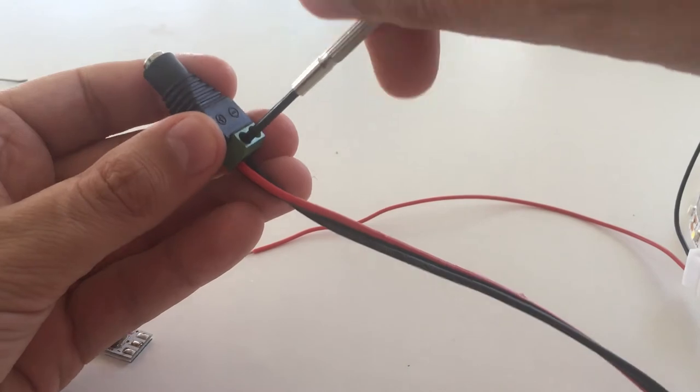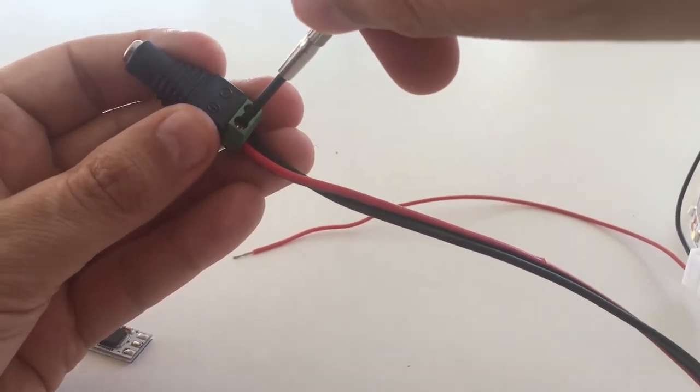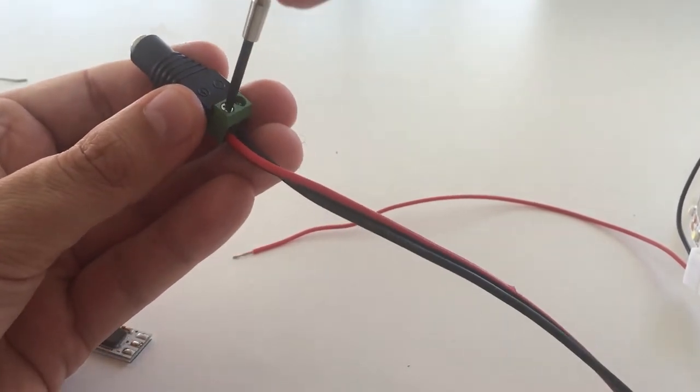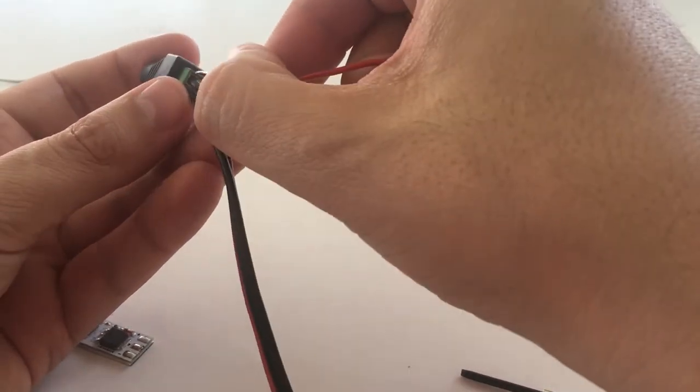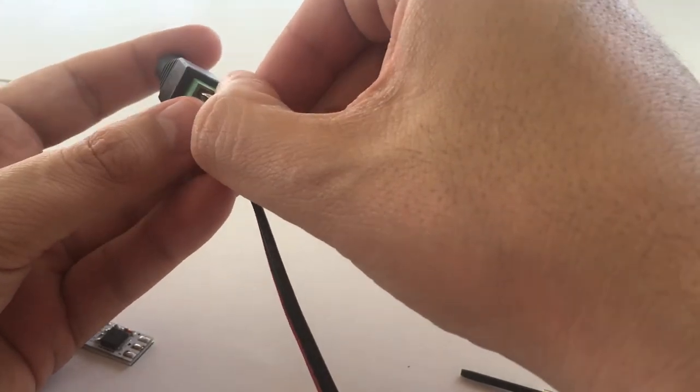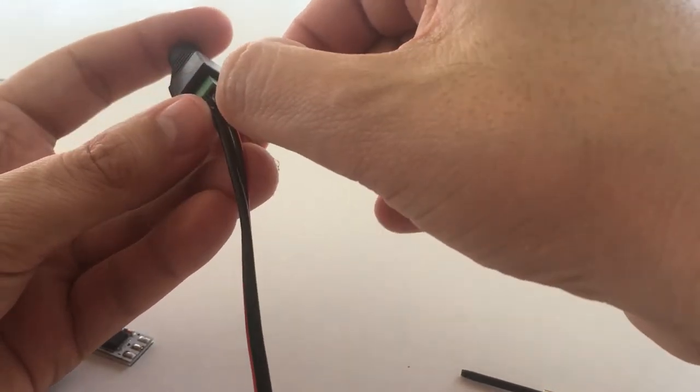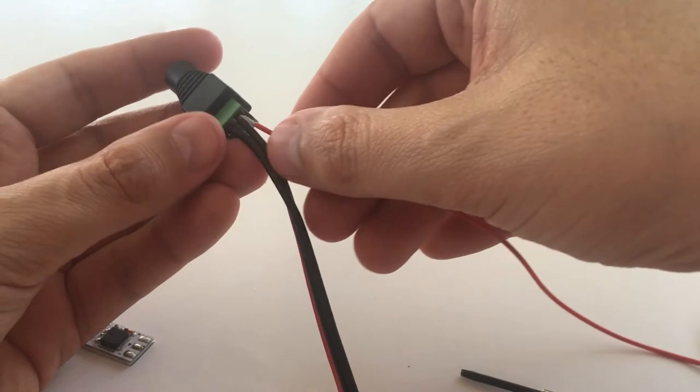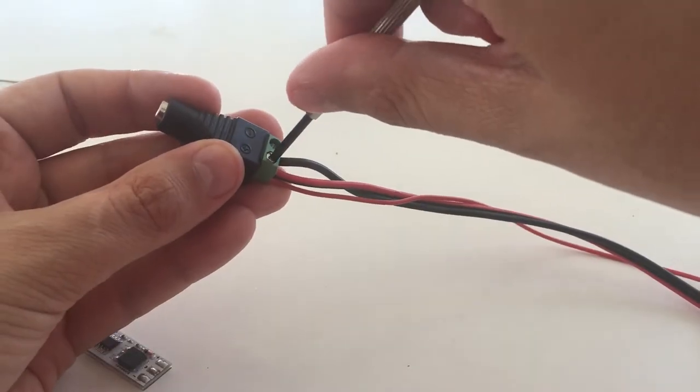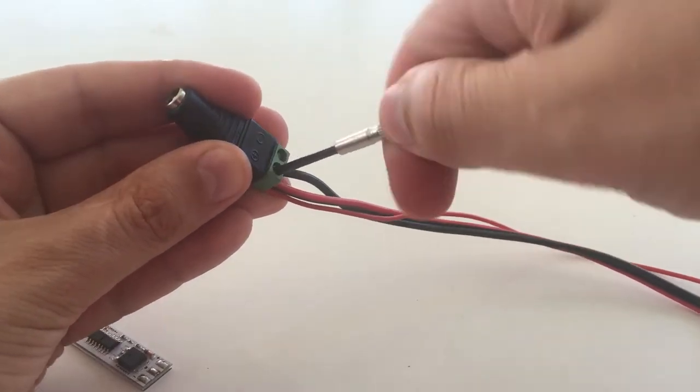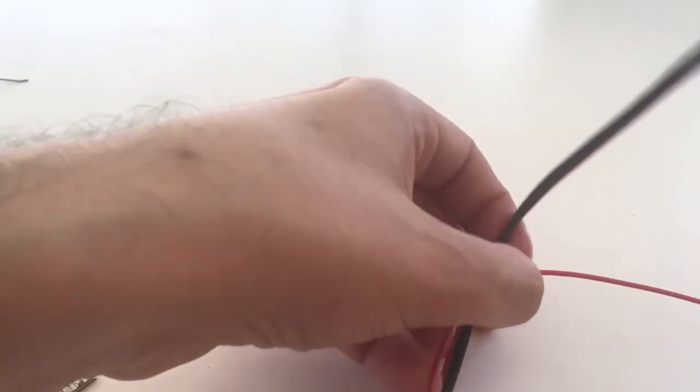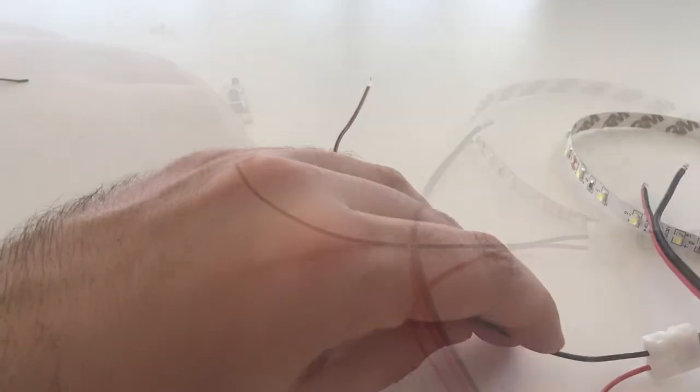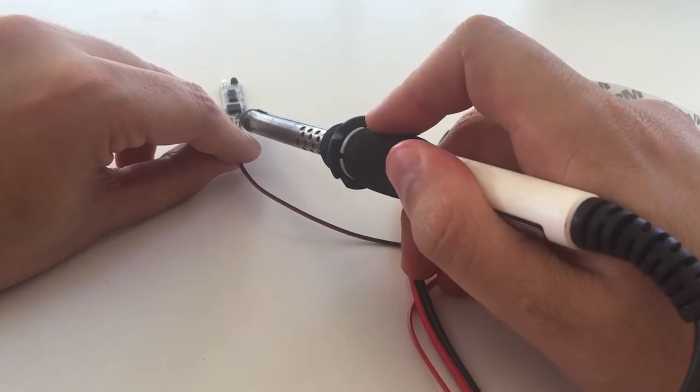We can avoid one soldering connection by using the power supply connector. Now we have to solder the LED strip connections to the controller.